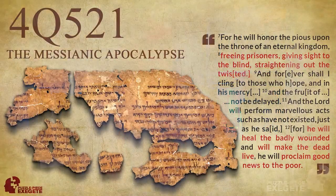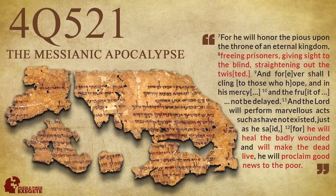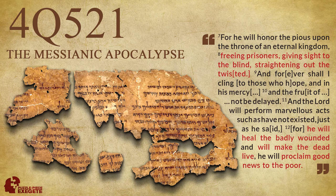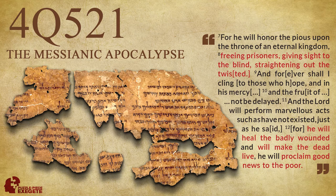So 4Q521: the '4' stands for cave number 4 — there are 11 caves in Qumran. '521' stands for the fragment or scroll number that has been catalogued, so it's the 521st manuscript or fragment number. This is also known as the Messianic Apocalypse because it references a messiah figure who is able to do liberative and miraculous works.